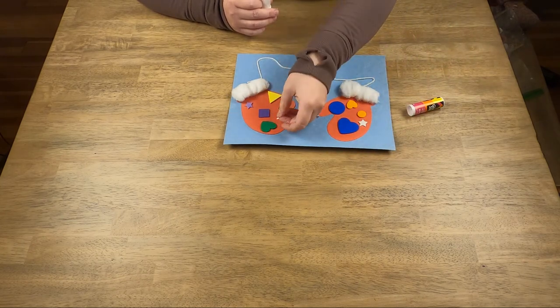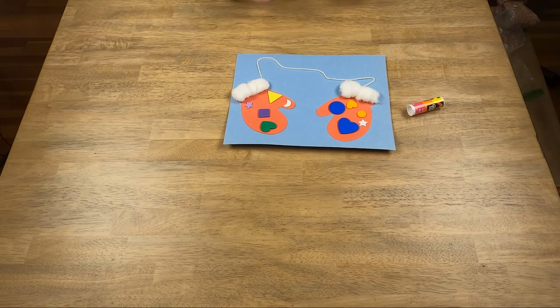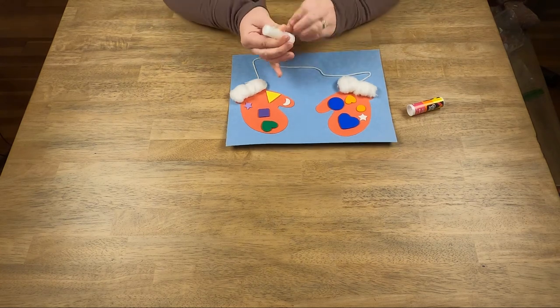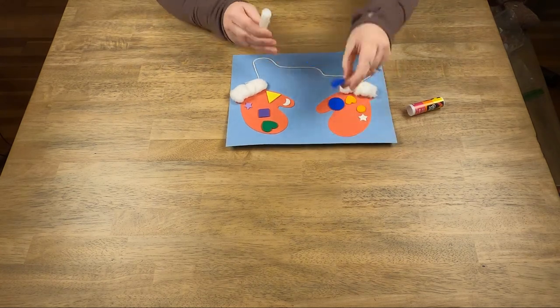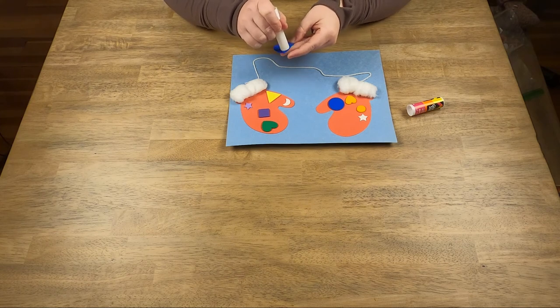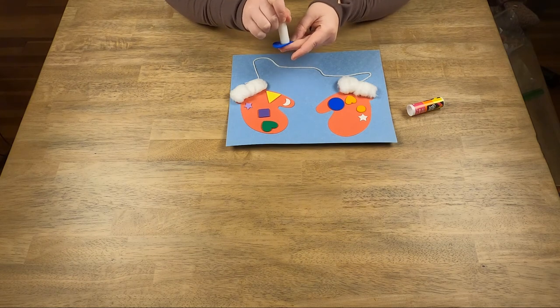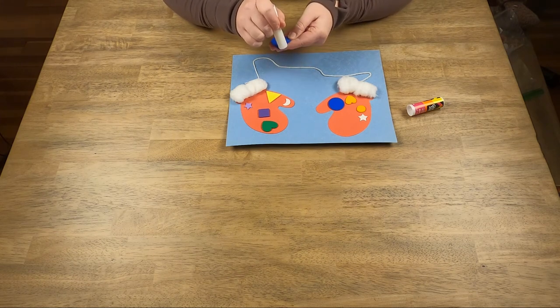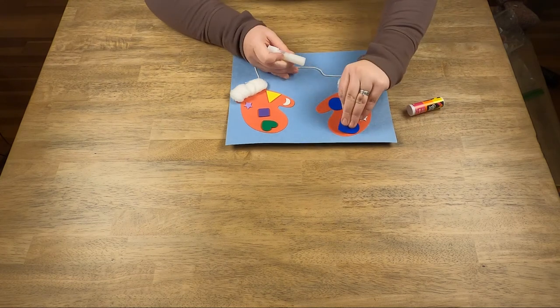So I'm just laying them out to see how they'll fit. Just like that, perfect. Now I'm gonna take my glue stick back out and glue these pieces down. Glue it directly onto the shapes rather than the mittens, because then you won't have globs of glue hanging out.